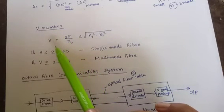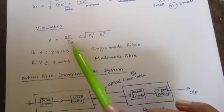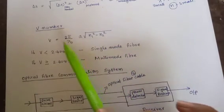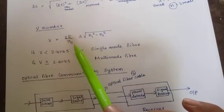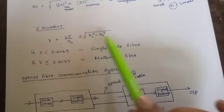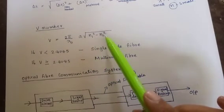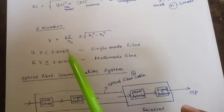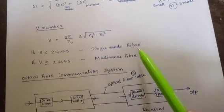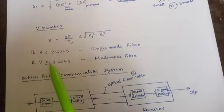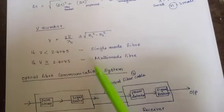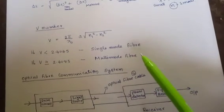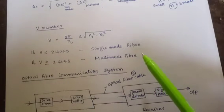The V-number equation is: V equals (2 pi divided by lambda-zero) times a, times the square root of (N1 squared minus N2 squared). Here, lambda-zero is the wavelength of the light pulse, a is the core radius, and N1 and N2 are the refractive indices of the core and cladding respectively. If V is less than 2.4045, that is a single-mode fiber. If V is greater than or equal to 2.4045, that is a multi-mode fiber.